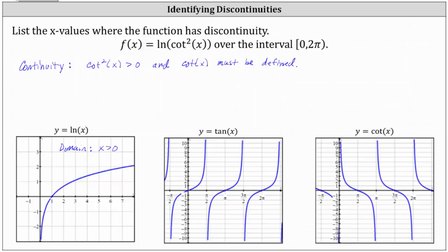So now let's list the conditions for discontinuity. We know to be continuous, cotangent squared x must be greater than 0. Well, because we're squaring the cotangent function value, cotangent x can be negative because squaring a negative results in a positive. But this does indicate we would have discontinuity where cotangent x equals 0. Cotangent x equals 0 does not satisfy the condition for continuity of cotangent squared x being greater than 0. Similarly, to be continuous, cotangent x must be defined, and therefore if cotangent x is undefined, we also have discontinuity.